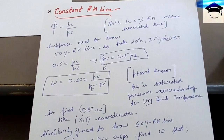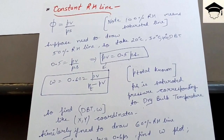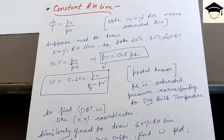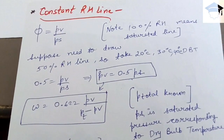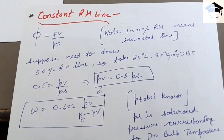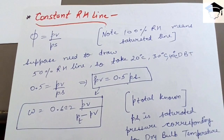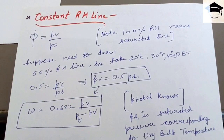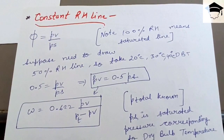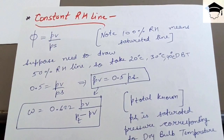Now, the formula is φ (phi) = PV / PS, where phi is the relative humidity. Suppose we need to draw the 50% RH line.